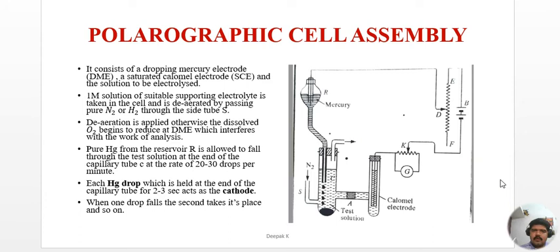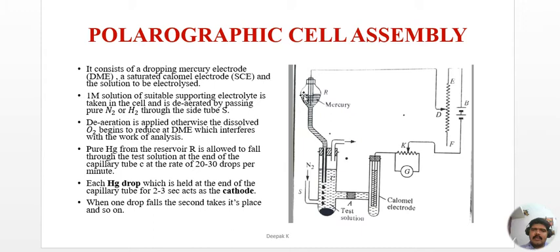The most important component of the polarographic cell is the dropping mercury electrode (DME), along with a saturated calomel electrode (SCE) and the solution to be electrolyzed. A one molar solution of a suitable supporting electrolyte is taken in the cell and de-aerated by passing pure nitrogen or hydrogen through a side tube. De-aeration is necessary because dissolved oxygen would begin to reduce at the DME and interfere with the analysis.